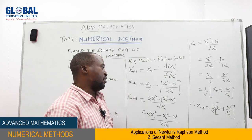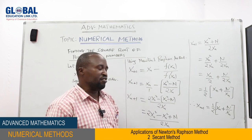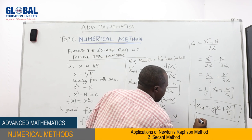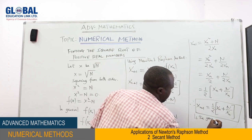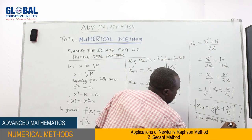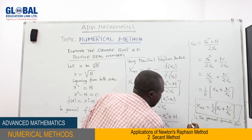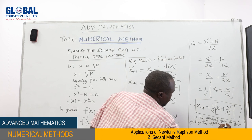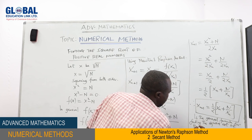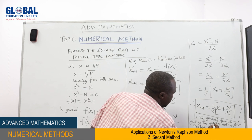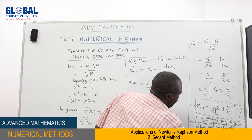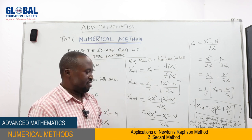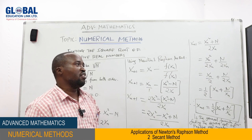Therefore, Xn+1 = (1/2)(Xn + N/Xn). This is the general formula for finding the square root of a positive real number. Now let us see how we can apply this formula using review question 1.